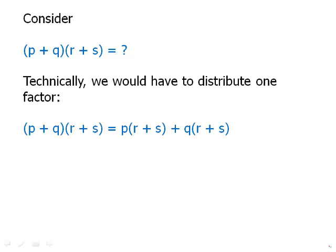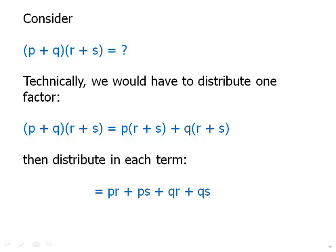Let's say that second factor, (r + s), that whole thing as a factor, we'd have to distribute it across the first addition. So we get p(r + s) + q(r + s), and then once we get to that point, we'd have to distribute in each one of those terms. Distribute the p in the first term, distribute the q in the second term. That is technically what we would have to do to distribute.